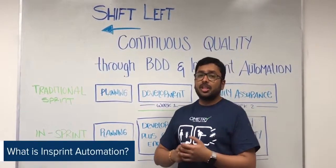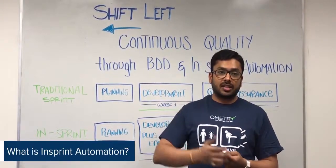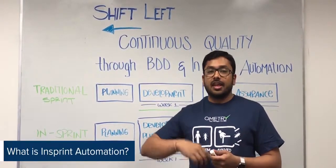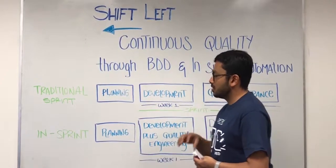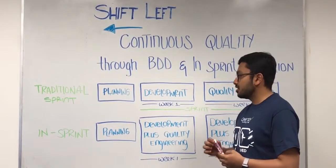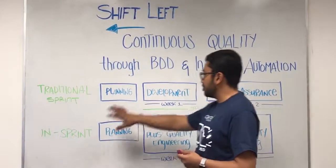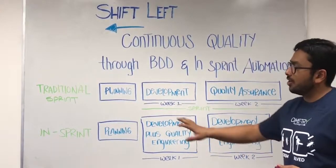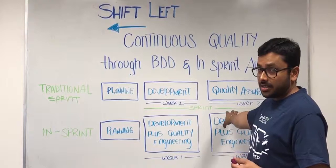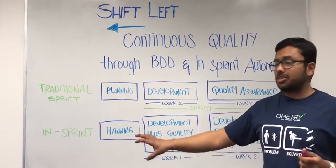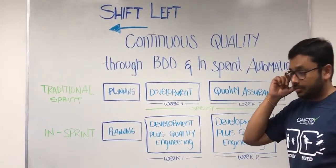When we talk about In-Sprint automation, what is In-Sprint automation? When we are talking about Agile testing and shift left testing, In-Sprint automation is very important. In shift left, we are talking about In-Sprint. So what you see here is a traditional sprint in our Agile testing methodology. And when we are talking about shift left, we are talking about in-sprint automation or in-sprint testing.